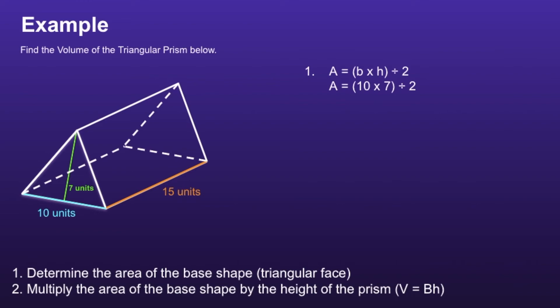Since there are parentheses, we have to multiply first. And 10 times 7 is equal to 70. Last step is to divide by 2 — 70 divided by 2 is equal to 35. So the area of the triangle is 35 units squared.